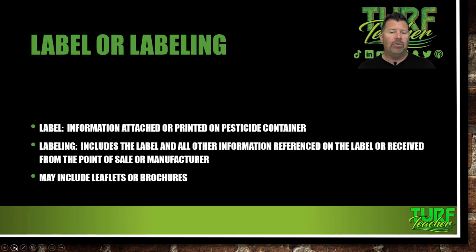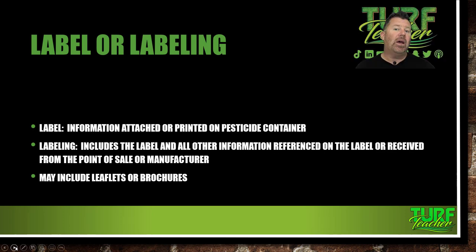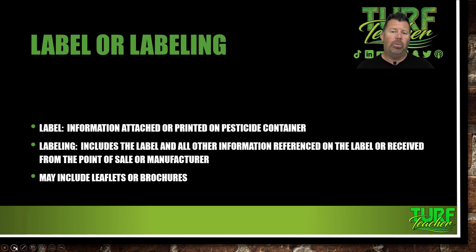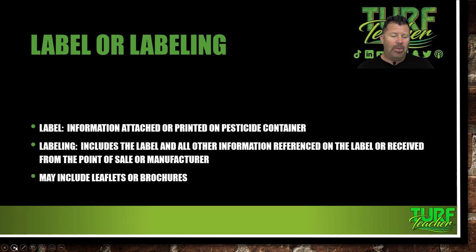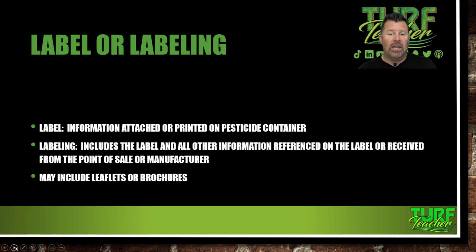Labeling includes the label and all of the printed information referenced on the label and received from the point of sale or manufacturer. When you go to trade shows like the Green and Grove show, you're going to be able to pick up copies of labels and other labeling material coming directly from manufacturers. They may include leaflets and brochures from manufacturing. We go to GIE every year and I always leave with a stack of pamphlets and brochures on new chemicals because they want me to take it back to the college and show students how to read a label and understand the information they can pull from labeling.